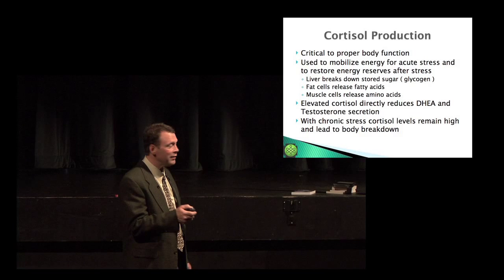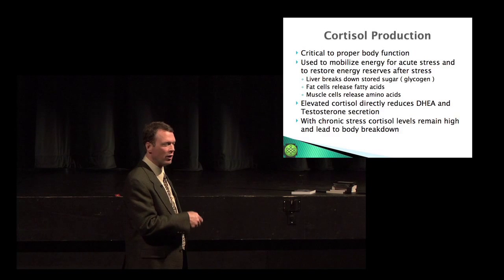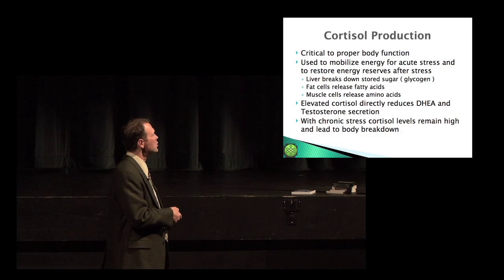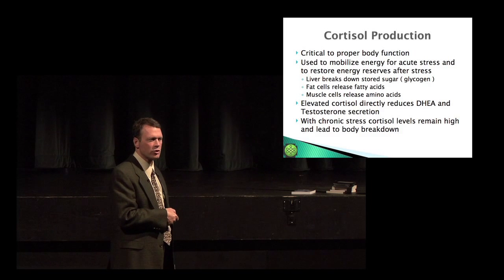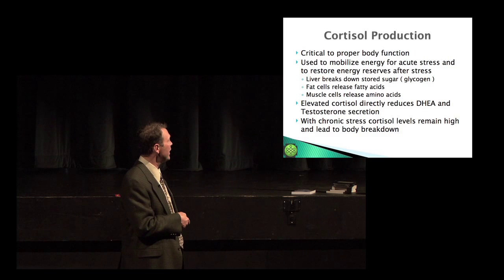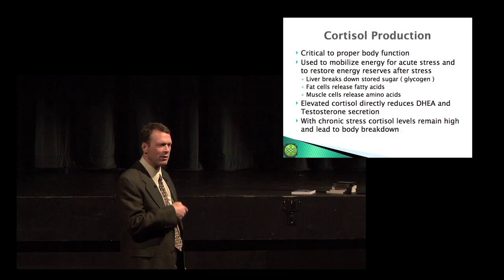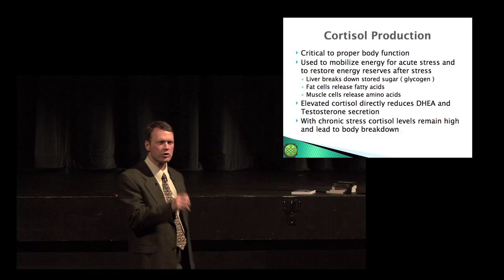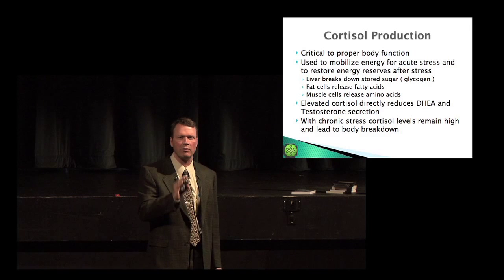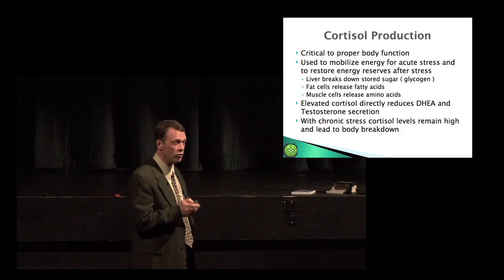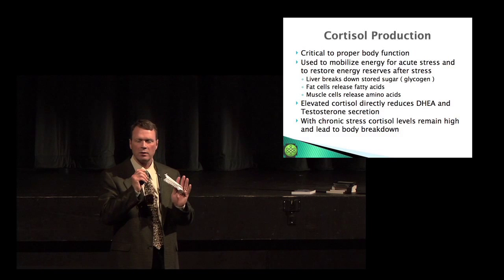I hope to convince you otherwise. We need cortisol - there's the tiger, I've got to run. Right away, cortisol breaks down stored sugar in the liver, releases fatty acids from fat cells, and breaks down muscle to get immediate stores of energy, because those amino acids can be turned into sugar. Sugar in the body is energy. In the short term, you need sugar, so the body will temporarily break itself down.